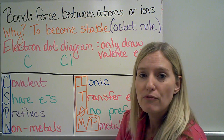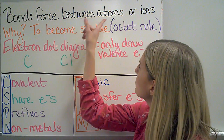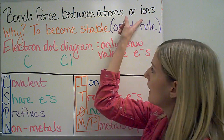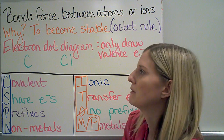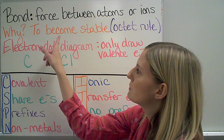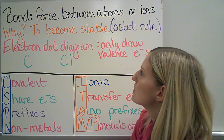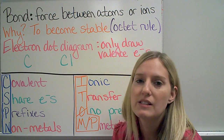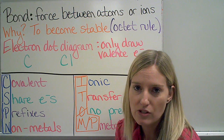So when I form a bond, it's going to be a force between atoms or between ions, which we'll talk about in a moment. Why do atoms do this? Because they want to become stable. In most cases, they're following the octet rule, which means that they want eight valence electrons.